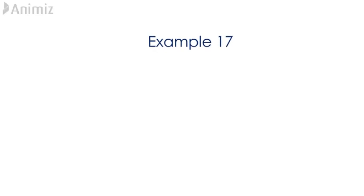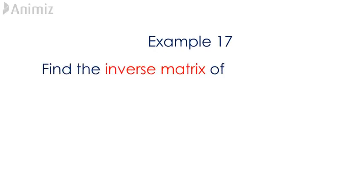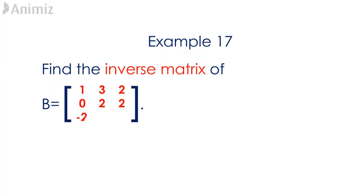Example 17. Find the inverse matrix of matrix B containing the elements 1, 3, 2, 0, 2, 2, negative 2, negative 1, 0.